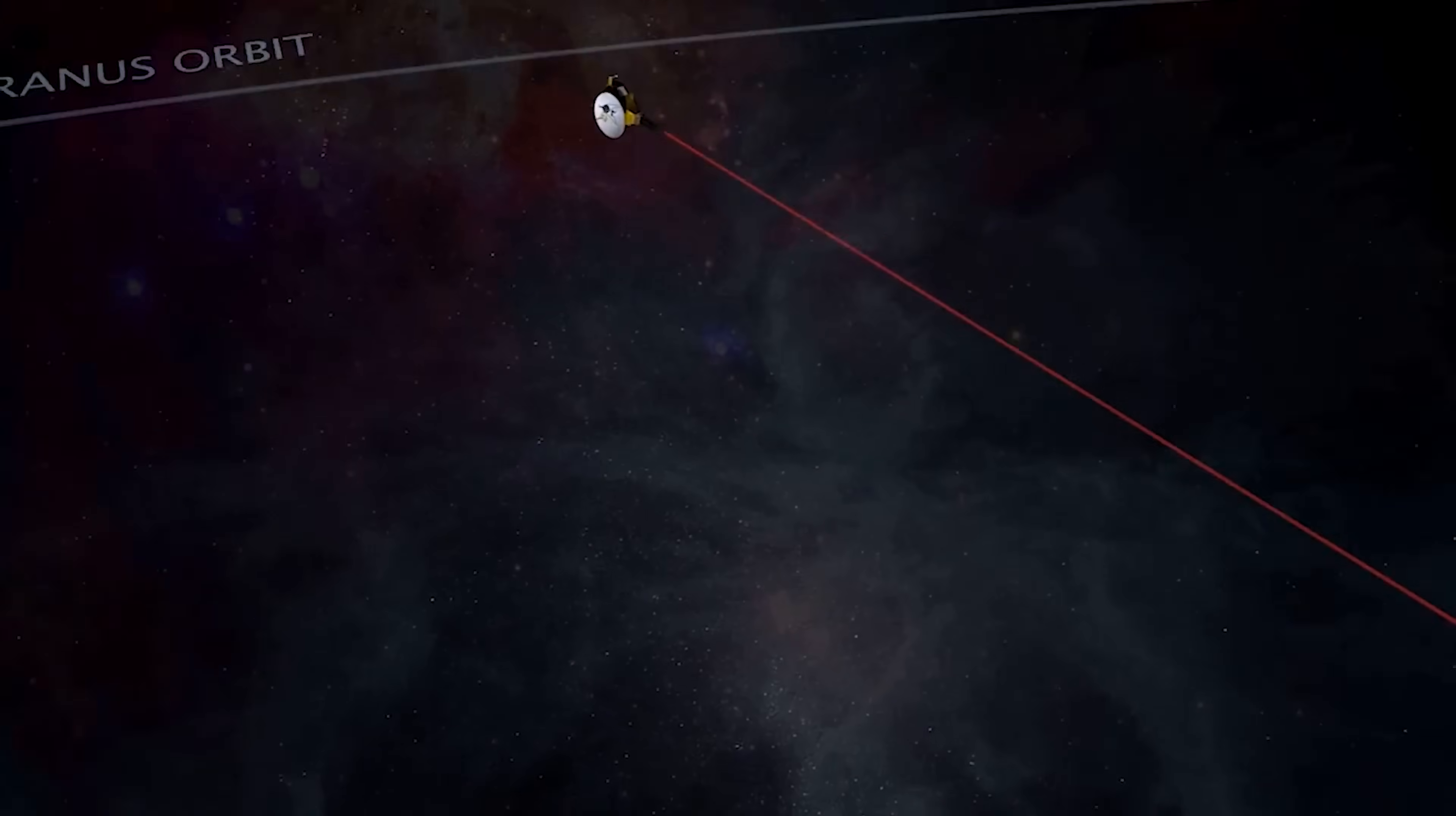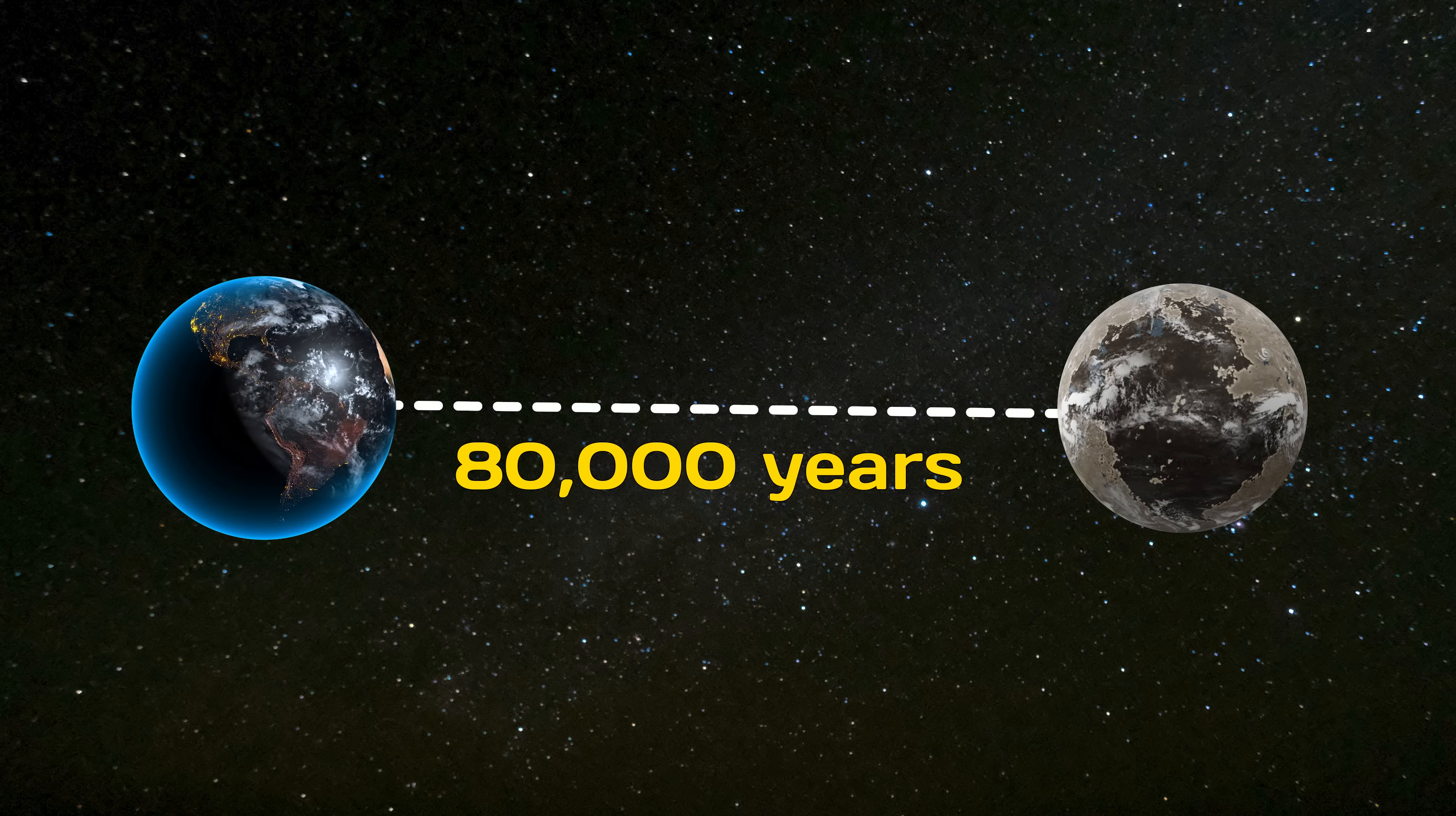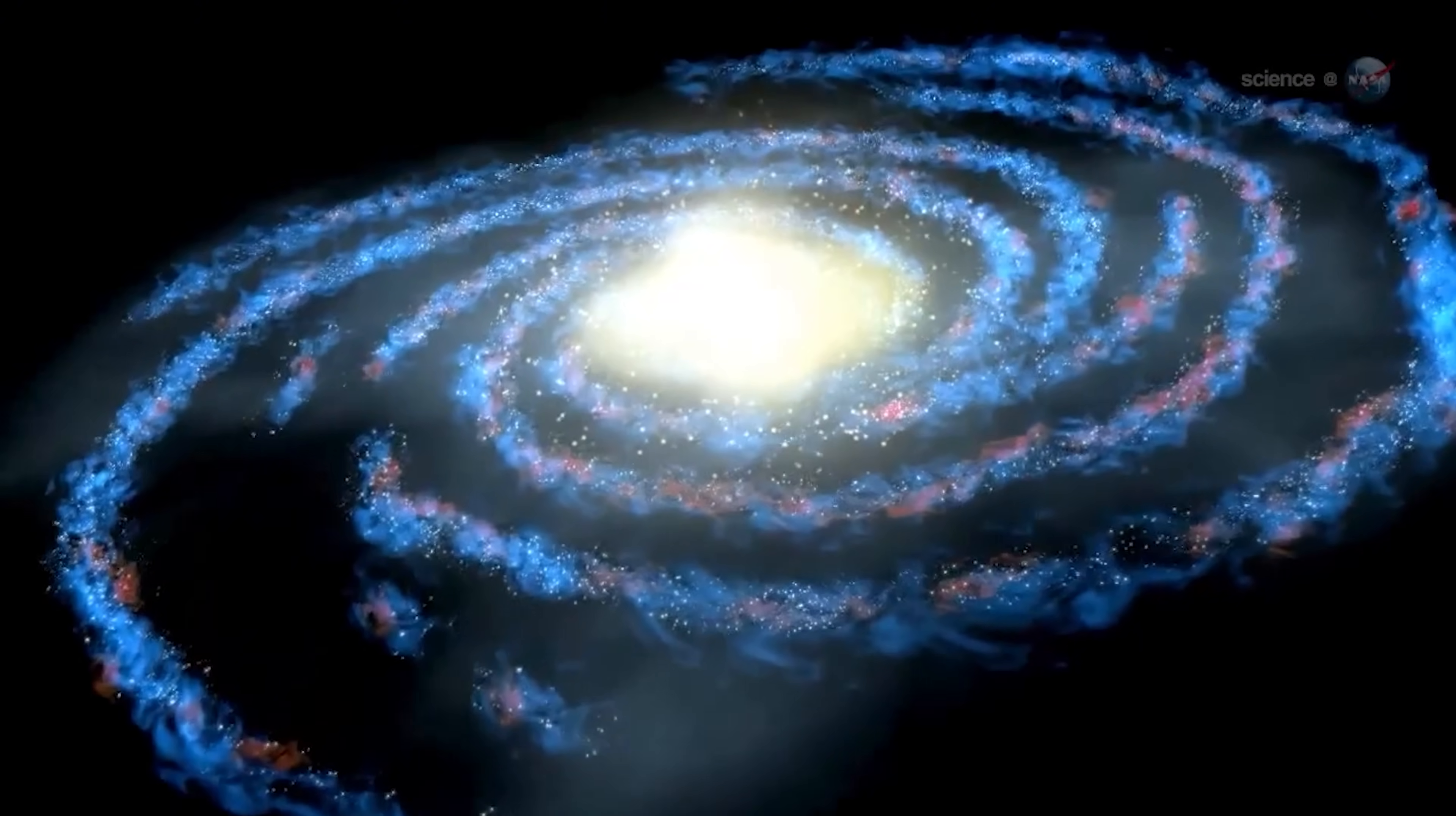To put that in perspective, the fastest spacecraft we've ever built is NASA's New Horizons probe, which travels at about 58,000 kilometers per hour. At that speed, it would take roughly 80,000 years to reach Proxima Centauri B. Other spacecraft, like Voyager 1 and Voyager 2, are also blazing through space, at approximately 61,000 kilometers per hour and 55,000 kilometers per hour, respectively. But they aren't heading in the direction of Proxima B. Even if they were, the travel time would still be in the 80,000-year range. Clearly not a viable option for human exploration.